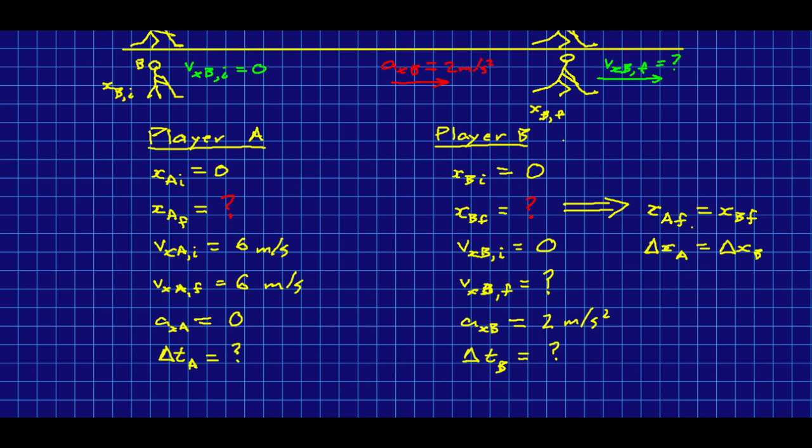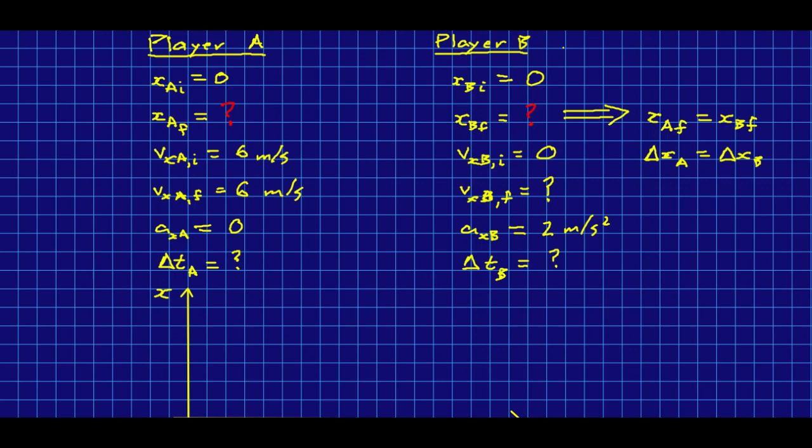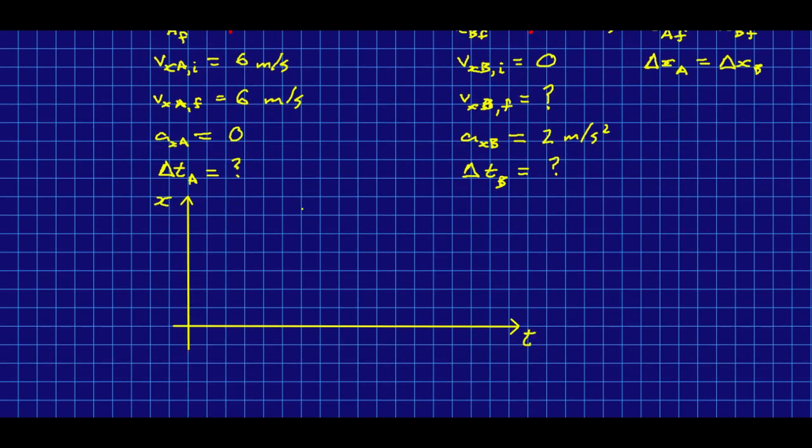And this is the insight you need to solve this question quickly. So note that if you were to draw an x versus t graph for these two, here's roughly what it would look like. Player A is moving at constant velocity. And they pass through x equals zero at t equals zero. So their x versus t graph is a straight line that looks like that. Player B starts at speed zero, so horizontal over here, and they're speeding up. And so their x versus t is some sort of a parabola that looks like this.